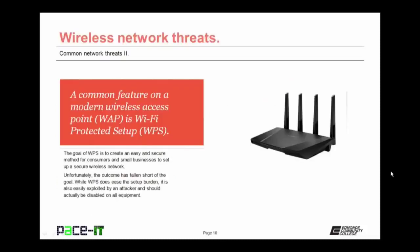It's time to move on to wireless network threats. A common feature on modern wireless access points is Wi-Fi Protected Setup, or WPS. The goal of WPS is to create an easy and secure method for consumers and small businesses to set up a secure wireless network. Unfortunately, the outcome has fallen short of the goal. While WPS does ease the setup burden, it is also easily exploited by an attacker and should be disabled on all equipment. This exploit has been known for a couple of years, yet equipment manufacturers continue enabling WPS by default on their equipment.